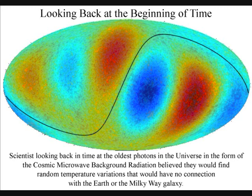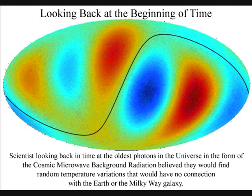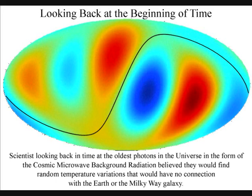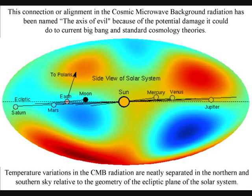But what they found is temperature variations in the form of spherical harmonic oscillations that seemed to be relative to the movement of the Earth. These temperature variations are neatly separated in the northern and southern sky relative to the geometry of the ecliptic plane of the solar system.